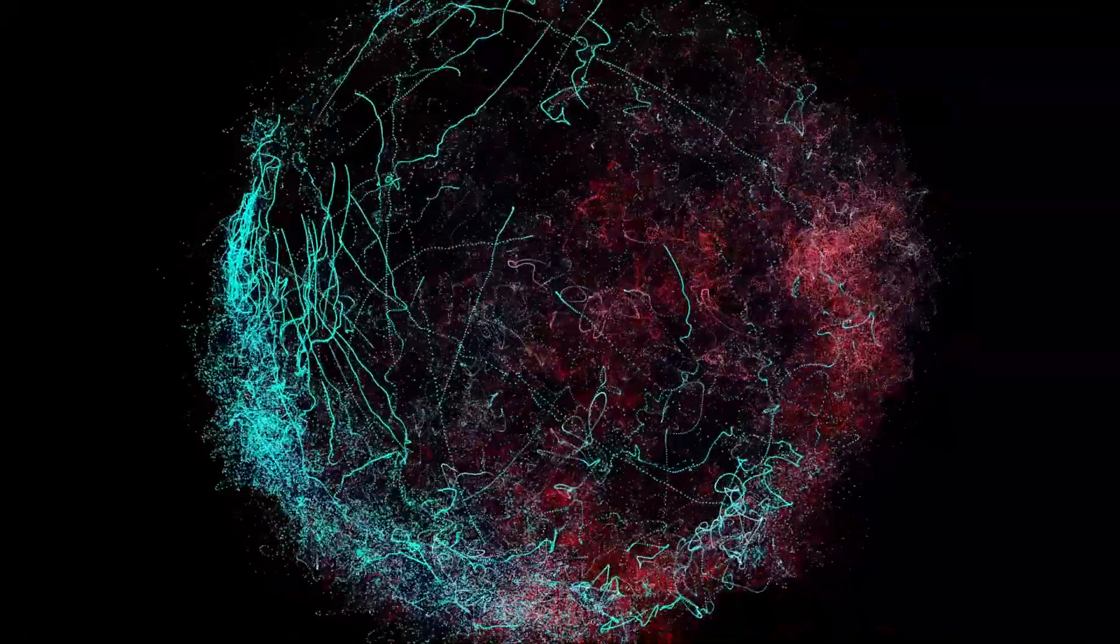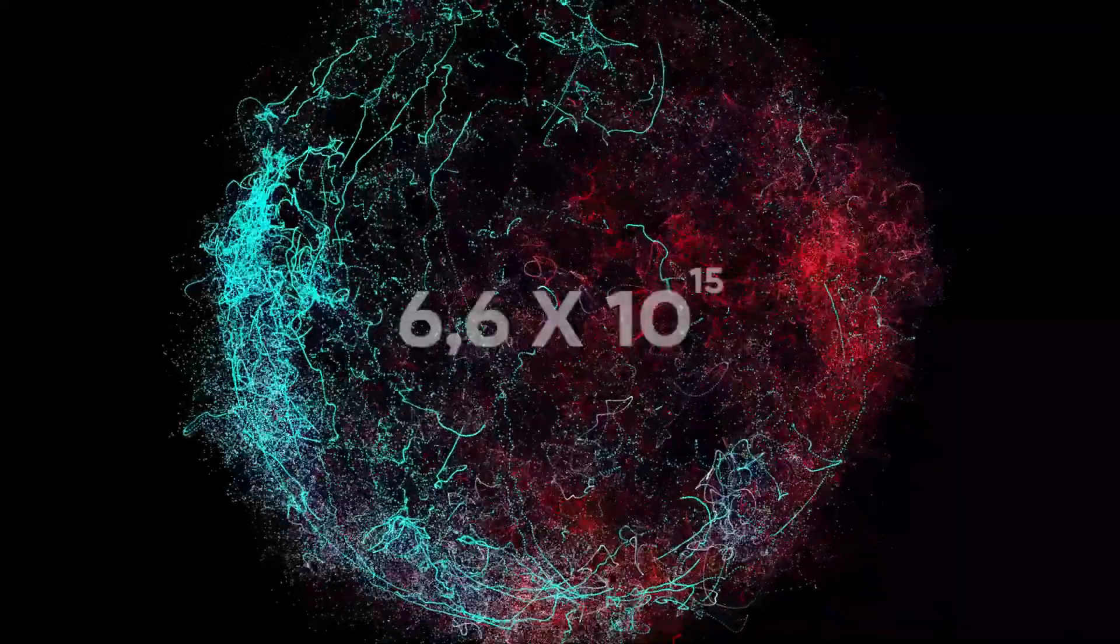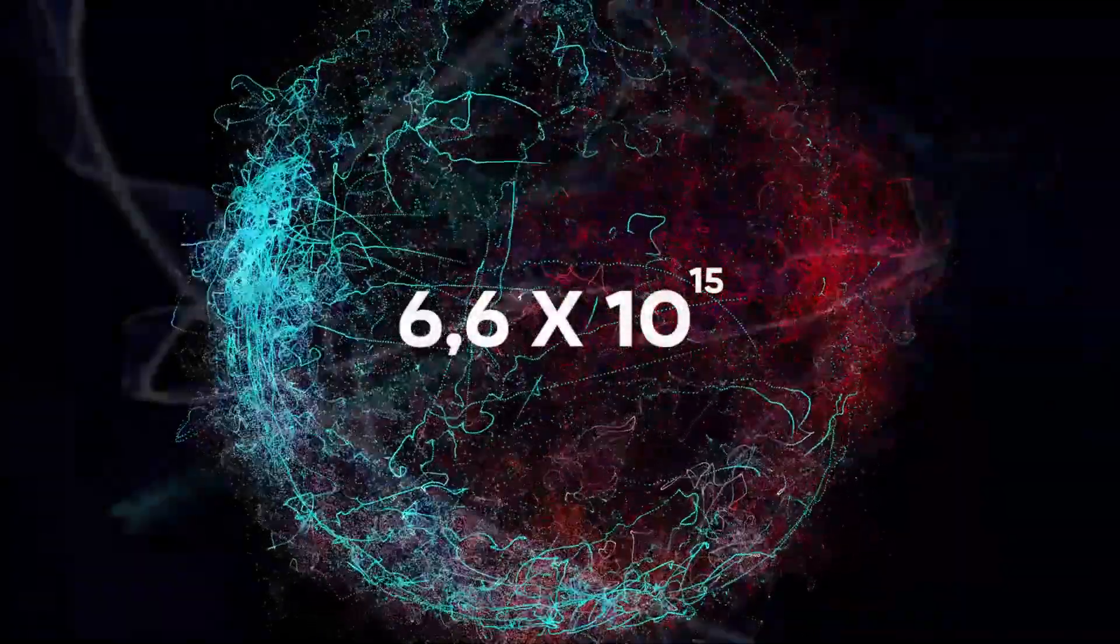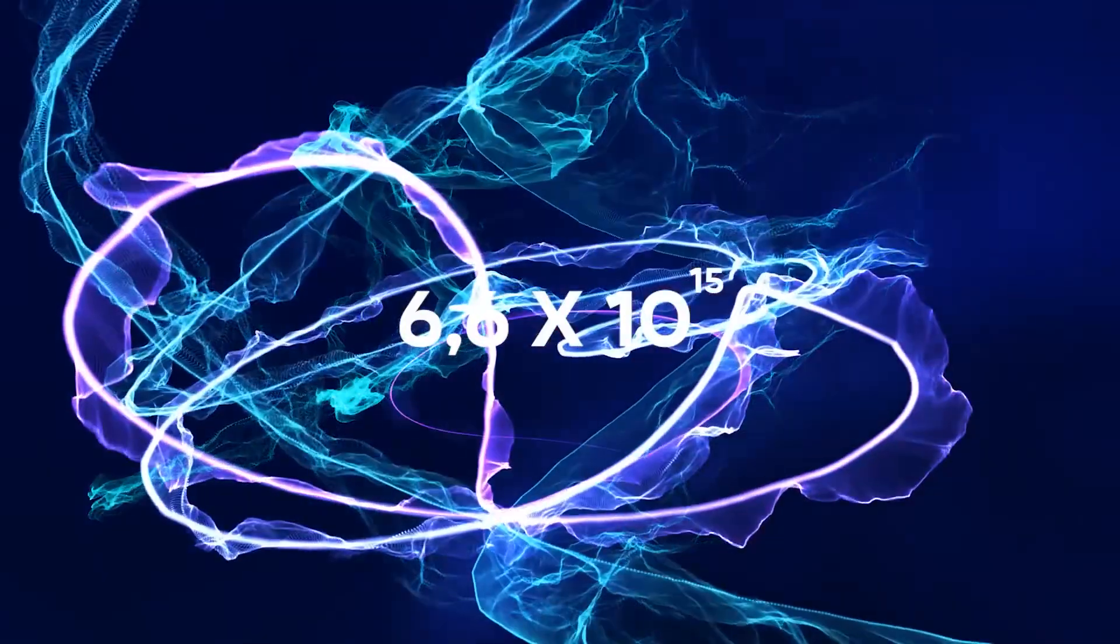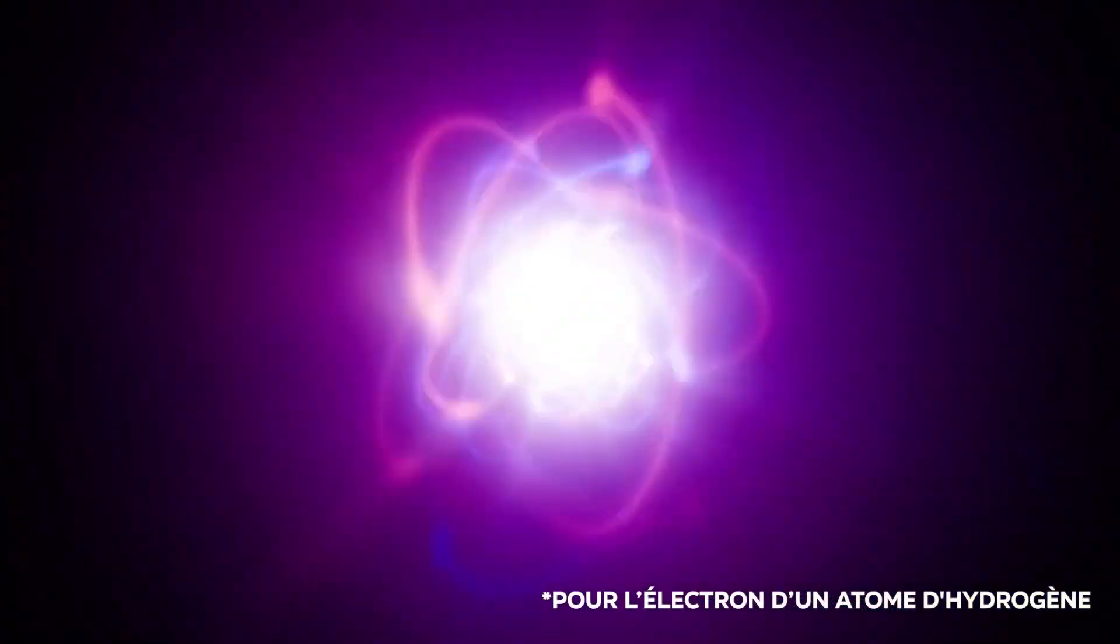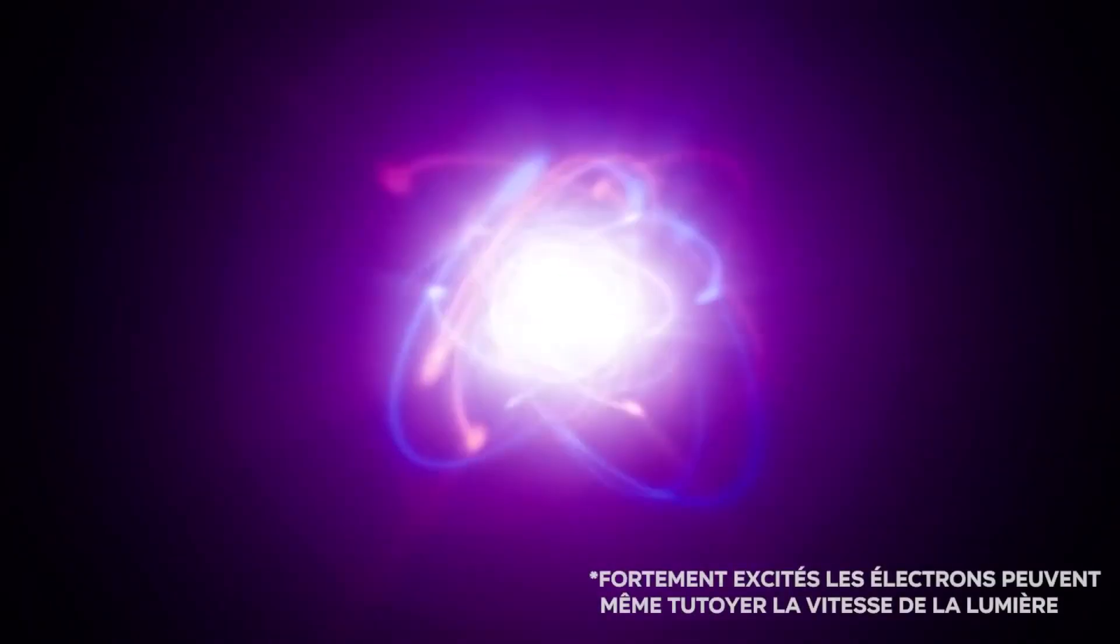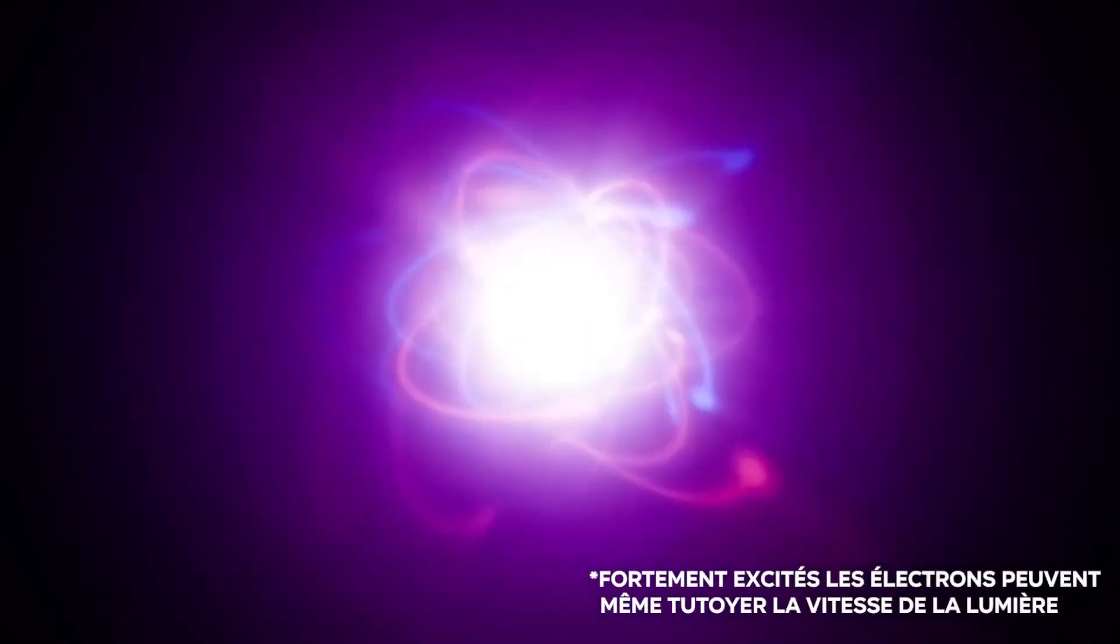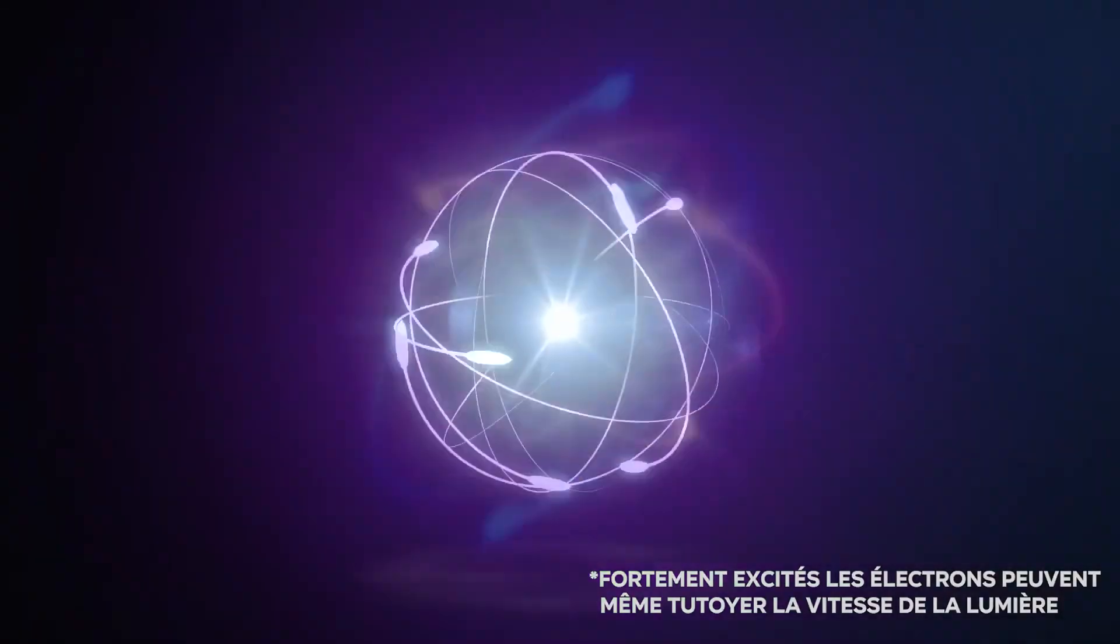Because even when calm, under ordinary conditions, an electron makes on average 6.6 times 10 to the 15th revolutions per second around the nucleus, which gives it a speed of about 2400 kilometers per second. This insane speed, which would allow you to make a round trip from Marseille to Brussels in less than a second, is also relatively negligible, since it doesn't even reach 1% of the speed of light.